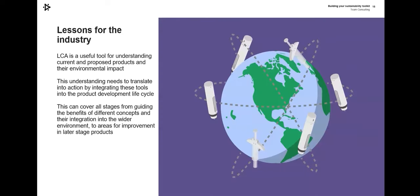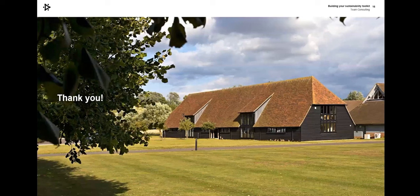In final summary, Lifecycle Assessment is a really useful tool in understanding both current and proposed products and their environmental impact. It allows us to get data, wherever we are in our development process, that can support those discussions and decisions. The really key thing is that we do need to translate it into action and use it to make decisions — not put it on the shelf and ignore it. We should be using this all the way through from requirements and different concepts, through every stage of development, revisiting the assessment, adding more data, and using it to highlight areas we can really improve and push ourselves towards a more sustainable, higher-performing product. Thank you for listening and I look forward to your questions.